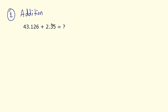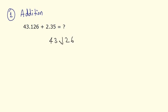Whenever you have to add two decimal fractions, the best way is to write them one below each other. So, I have the first decimal fraction which is 43.126. Then I would write the second number below it, but I have to see to it that the decimal points are aligned. So, I would write the decimal point below this decimal point. On the left hand side I have 2, and on the right hand side of the decimal point I have 3 and 5.